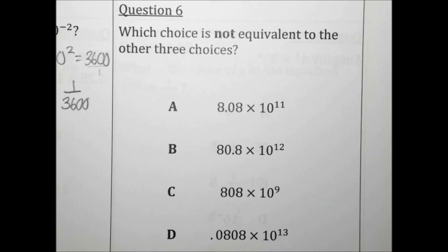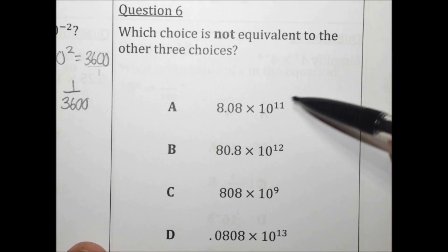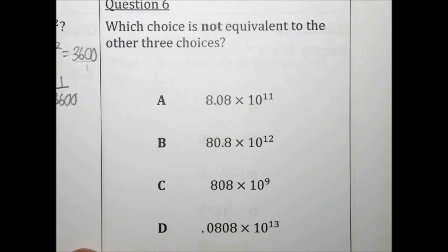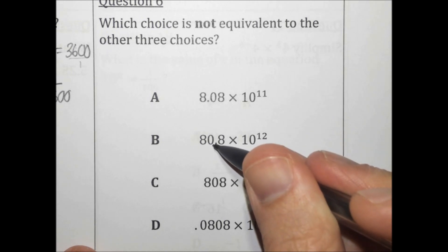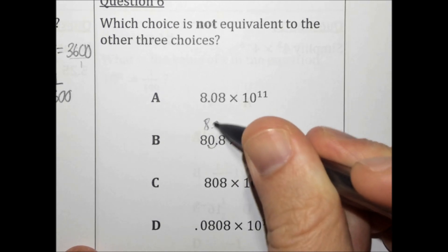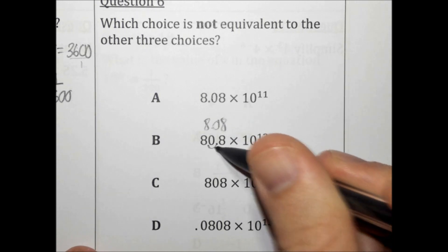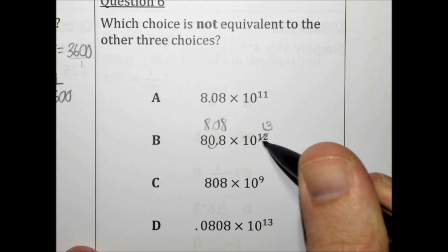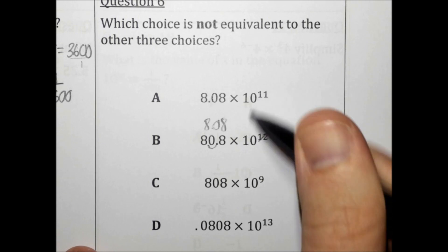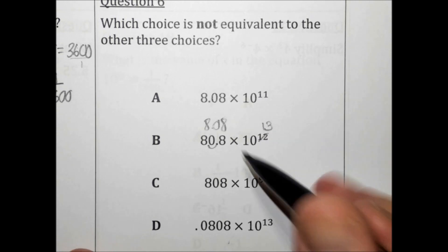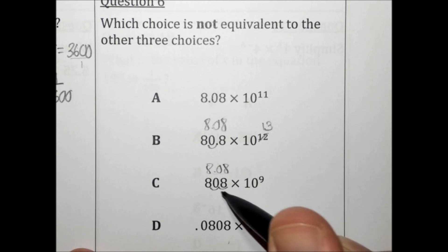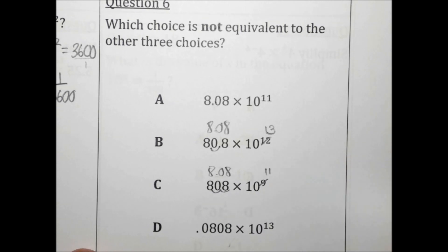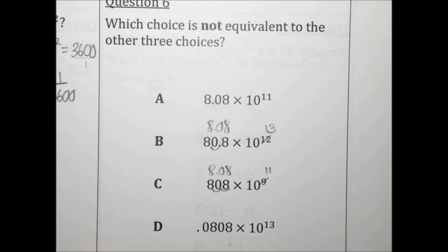Which choice is not equivalent to the other three choices? Let's get these all in scientific notation. Choice A is already in scientific notation. Choice B — the number out front is too big, so let's make it smaller: 8.08. When I make the number out front smaller, the exponent needs to get bigger, so right away we know choice B looks different. Choice C — we need to make the number out front smaller: 8.08. The decimal moved twice and the exponent needs to get bigger, so it's 11. So A and C are the same.